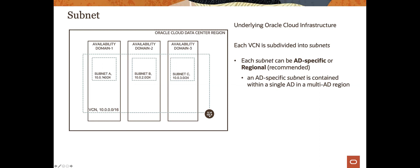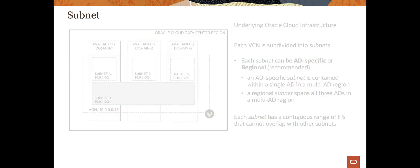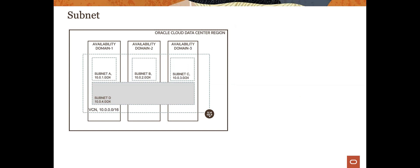For example, we created 10.0.1.0/24, then 10.0.2.0/24, and 10.0.3.0/24 as AD-specific subnets. We can also create a regional subnet that spans availability domains, but we must ensure non-overlapping IP addresses to avoid routing problems. Each subnet has its own range of IPs that cannot overlap — it sounds repetitive, but you'd be surprised how often that becomes an issue.